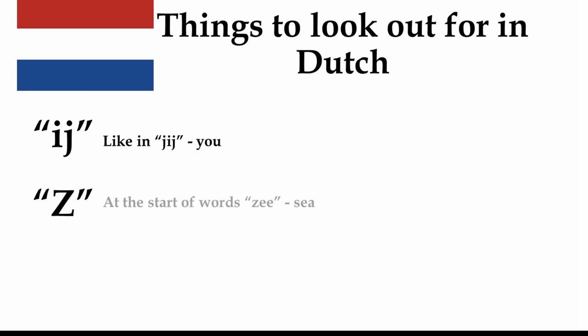We have the Z at the start of words. For example, 'zee' in Dutch, which means 'sea'. This is different from Afrikaans and Frisian, which prefer to use an S at the start of these words.